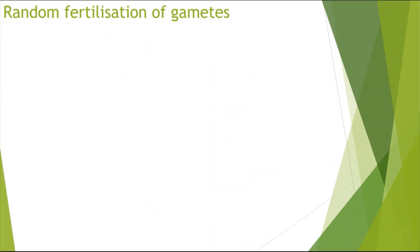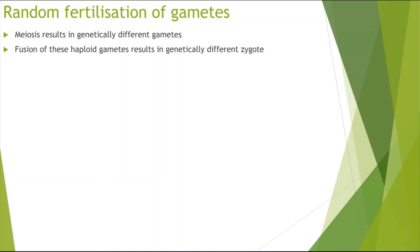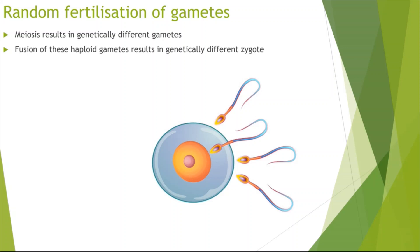The third mechanism contributing to genetic diversity is random fertilization of gametes. Meiosis produces genetically different gametes through crossing over and random assortment, increasing genetic difference. The fusion of these haploid gametes results in a genetically different zygote. Fertilization is random — each sperm has an equal chance of fertilizing the egg, and all sperms carry different genetic information due to meiosis. With over one million sperm attempting to fertilize an egg, each carrying different genetic information, this further increases genetic diversity.